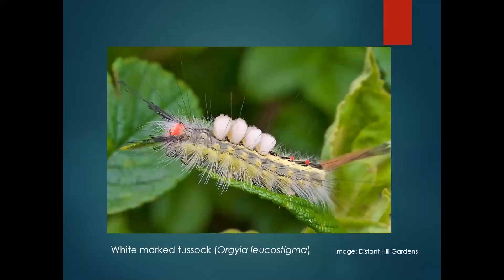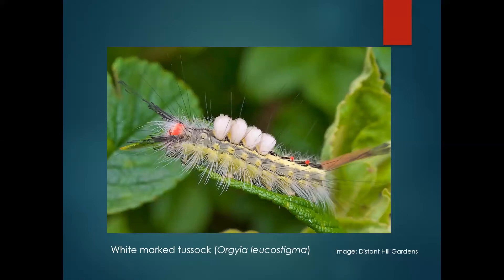I used to say that browntail is the only caterpillar in Maine with those two orange dots, but there is one other — white-marked tussock moth, which does have two orange dots. But it looks quite different than browntail — it sort of looks like Dr. Seuss's toothbrush.